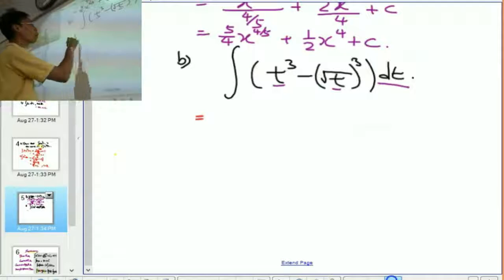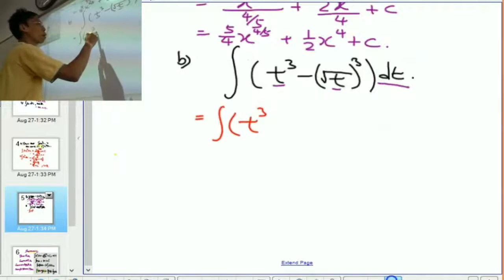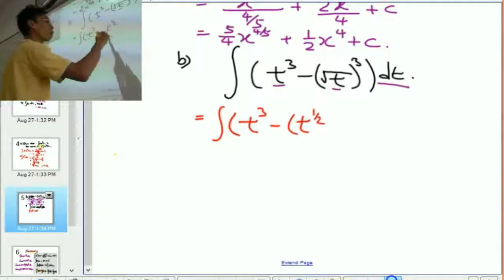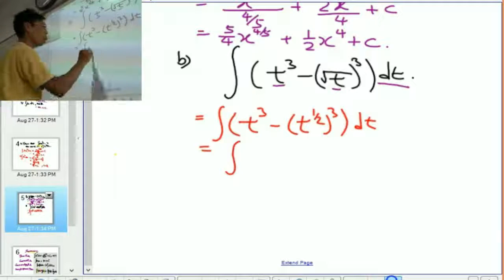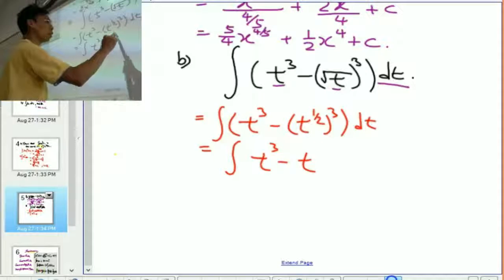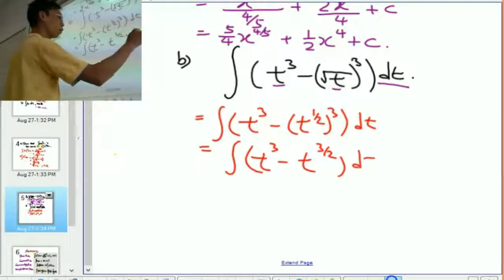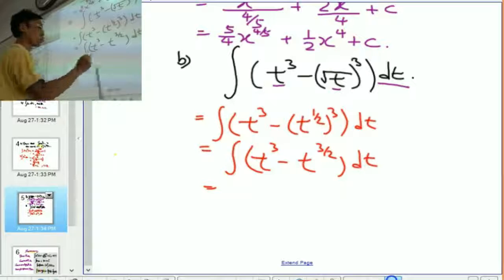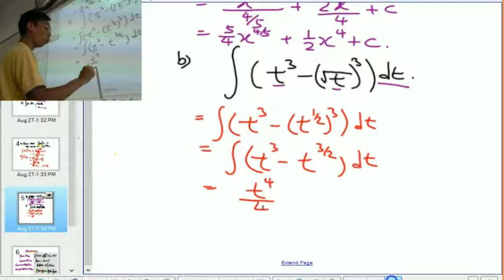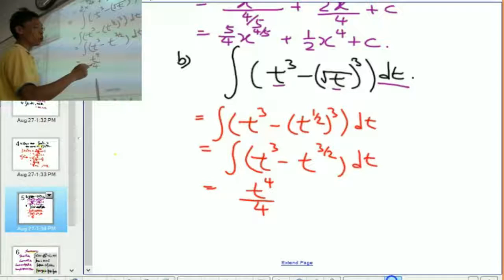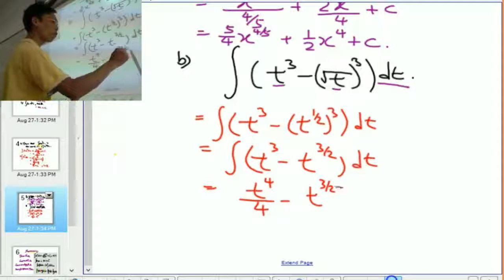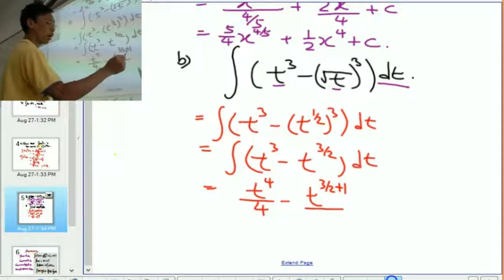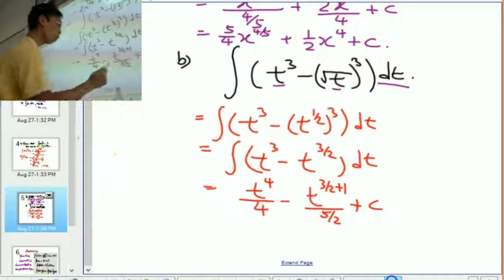All right. So, I'm going to rewrite this as t cubed minus this is t to the power of half raised to the power of 3 dt. That is integration of t cubed minus t 3 over 2 dt. So, this is t to the power of 4 over 4, minus t 3 half plus 1 over 3 half plus 1. 3 half plus 1 is going to be 5 over 2 plus c.